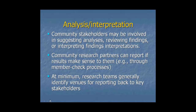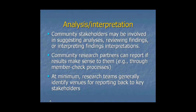In the analysis and interpretation stage, it's also important to engage the community. Community stakeholders may be involved in suggesting analyses, reviewing findings, or interpreting findings. Community research partners can report if results make sense to them. One way of doing that is through a member check process — reporting back preliminary results and seeing if those results resonate and seem valid. At minimum, research teams generally identify venues for reporting back to key stakeholders.